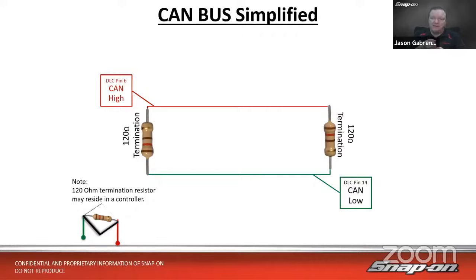I can do a search and sort down to an individual module, but I want to see the overall network. There's a category called Computer Data Lines — going into that gives us however many pages of networks on the vehicle. In this case there are four panels of data lines. Opening this up, you can see there's a wealth of wiring just for networks on this 2015 BMW. This is just network lines — maybe some powers and grounds, but no other wires. It's just networks.